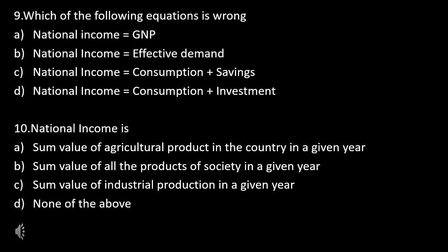Question 9: Which of the following equations is wrong? — National income is equal to GNP, National income is equal to effective demand, National income is equal to consumption plus savings, or National income is equal to consumption plus investment?